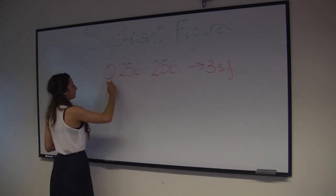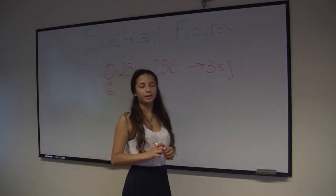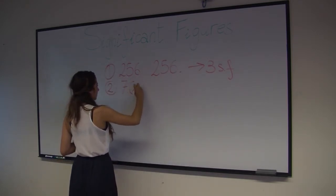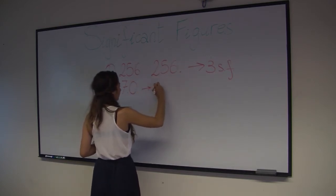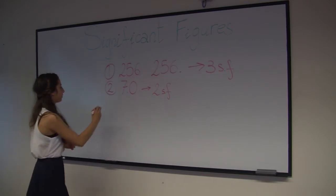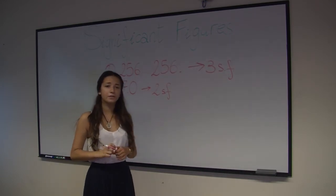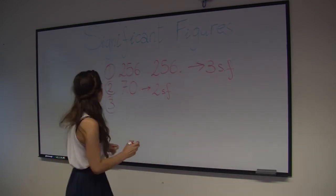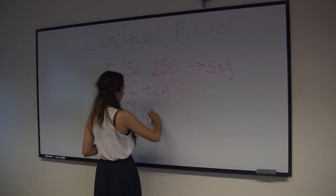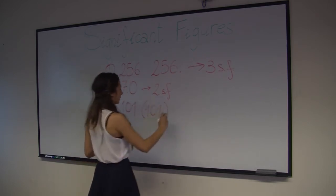Rule number two: all zeros after a decimal point are significant. Let's look at a quick example. 7.0 has two significant figures. Rule number three: zeros between other significant figures are also significant. Let's look at an example. The number 101 has three significant figures.